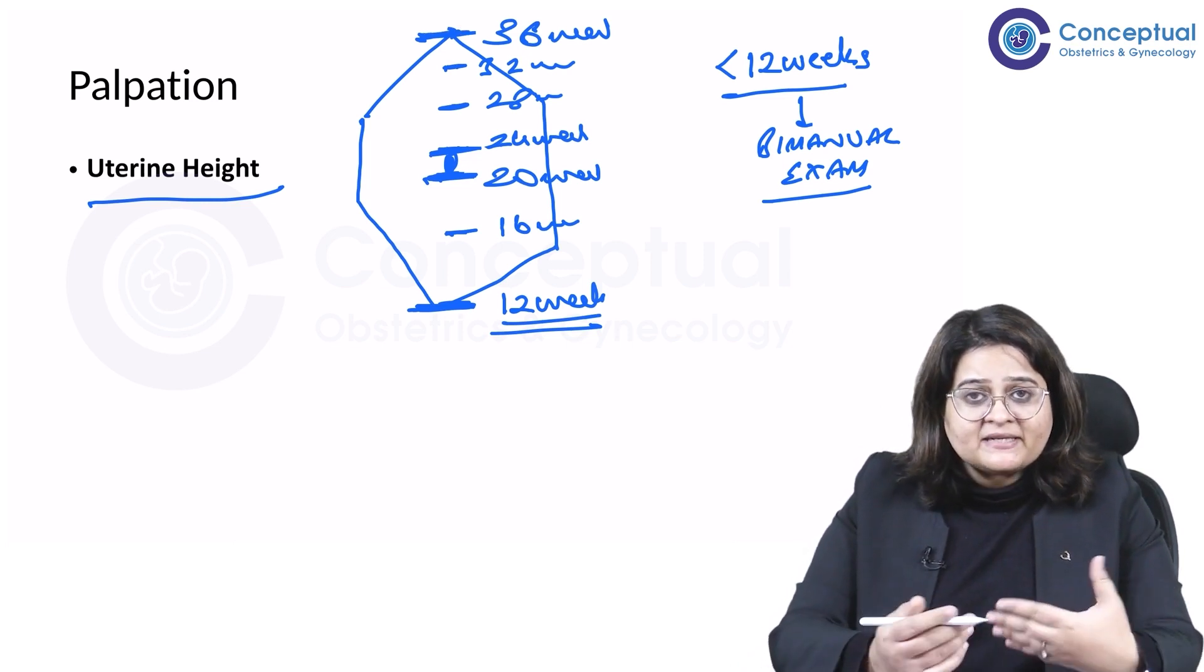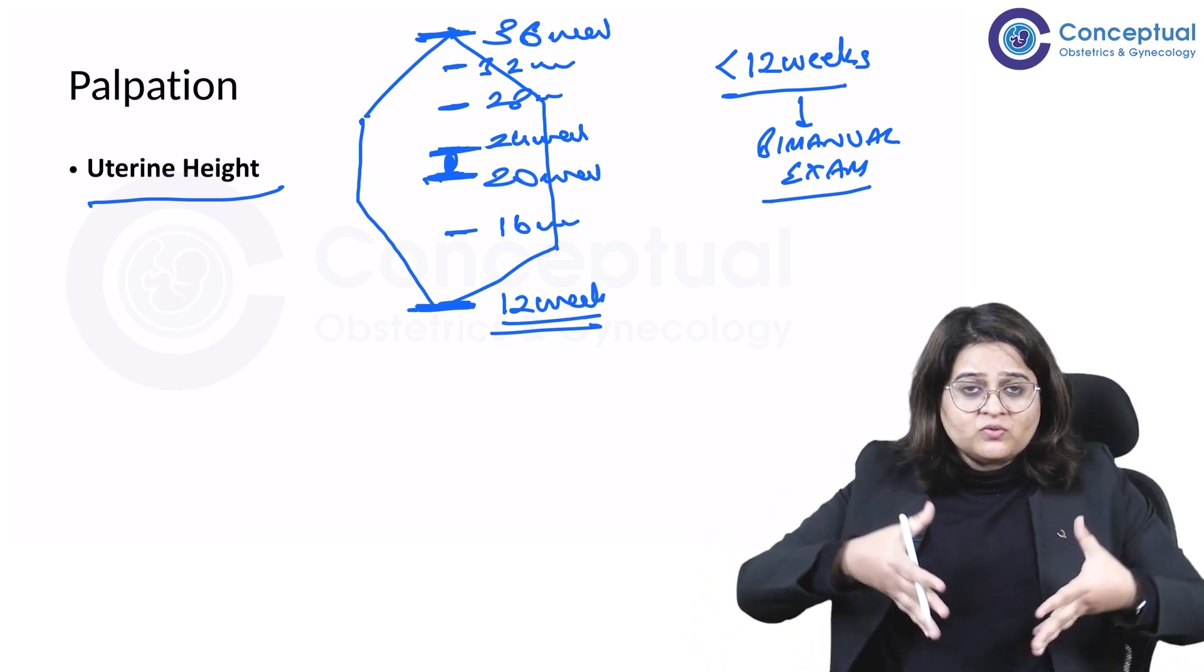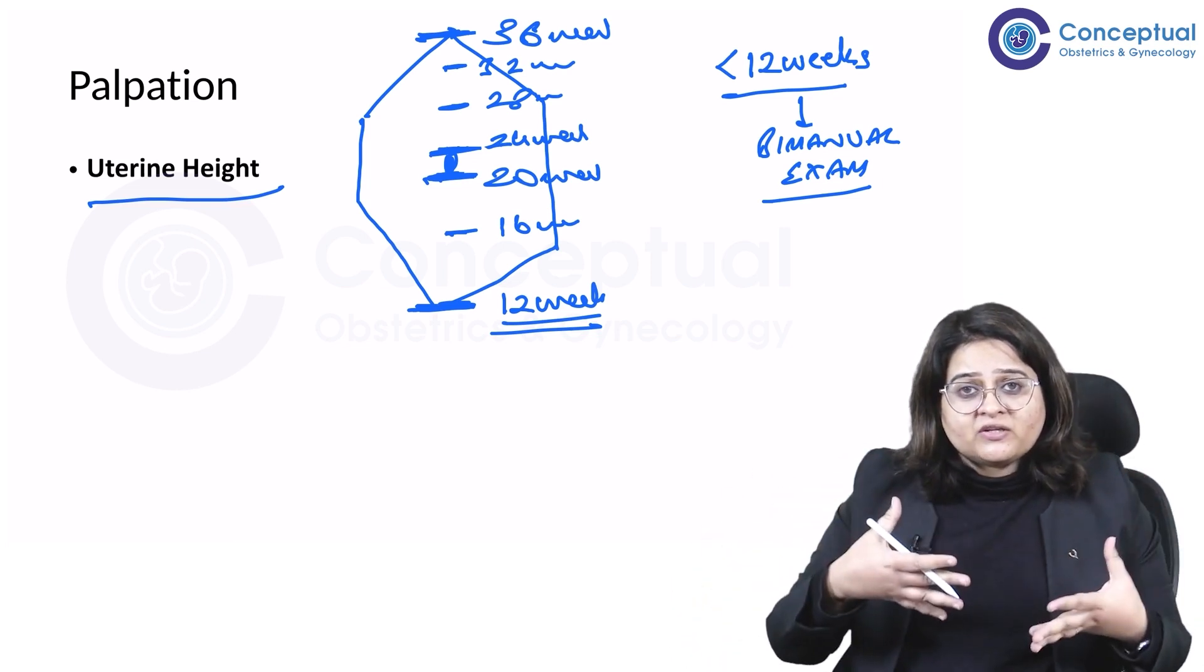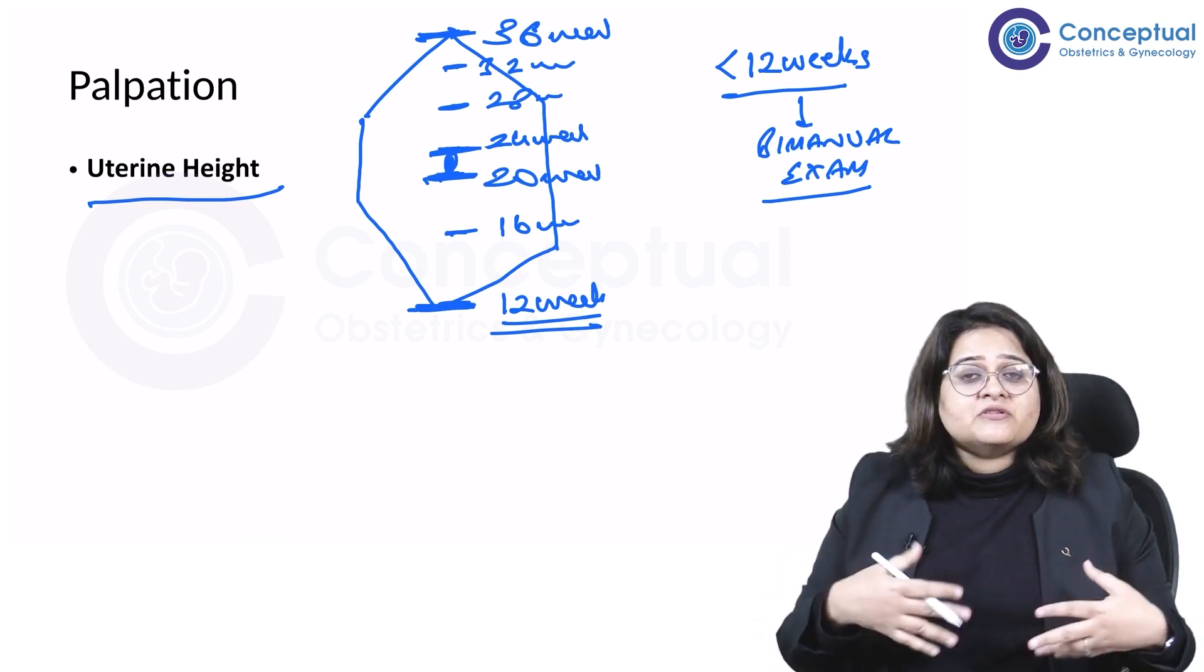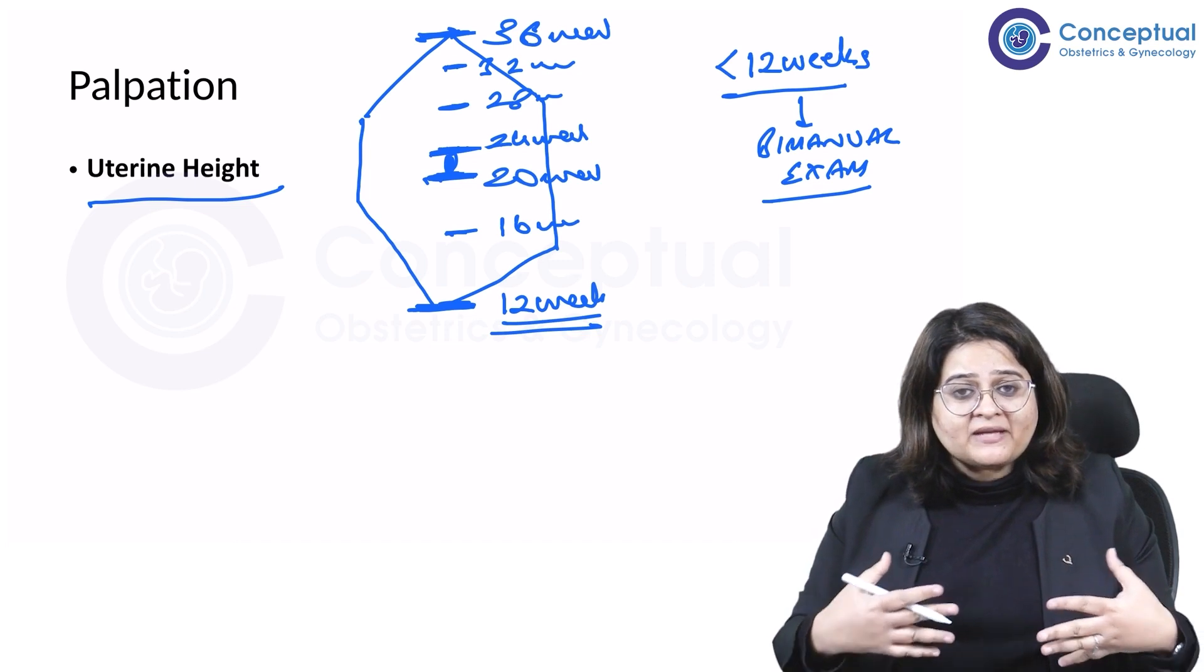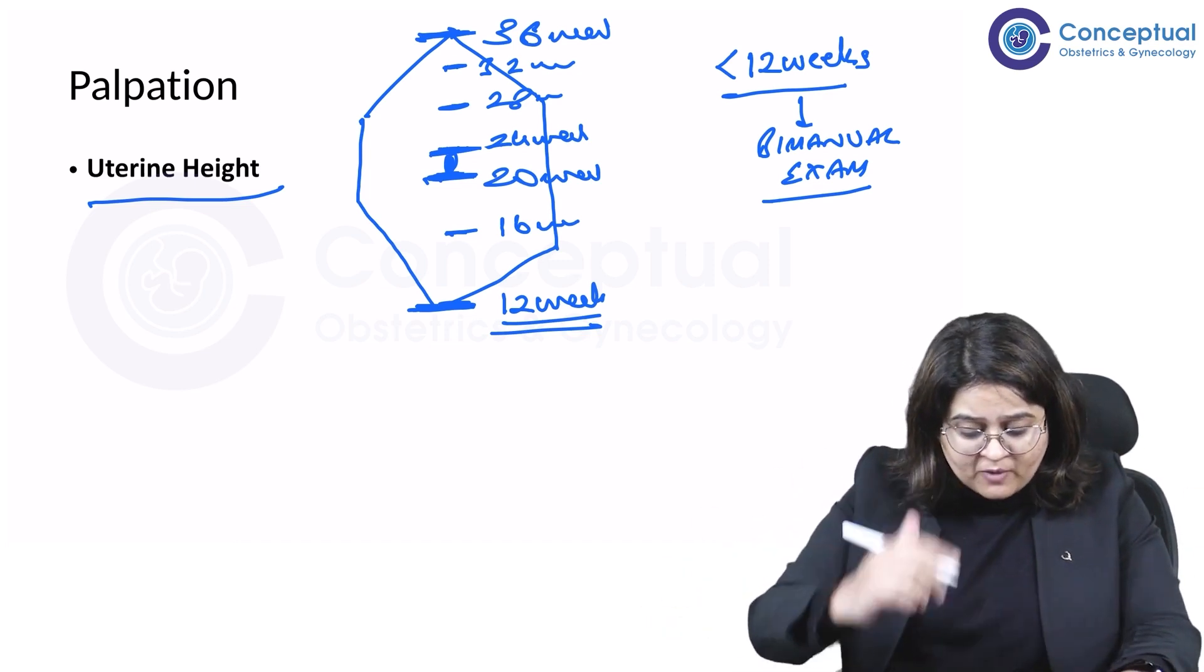What happens at term? So this is 36 weeks. At term, that means 37 weeks and beyond, what's going to happen? Usually the head goes in the pelvis. So if the head goes in, there's a feeling of lightening. The patient feels actually a lot better.